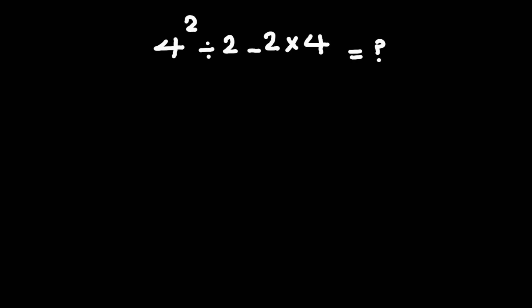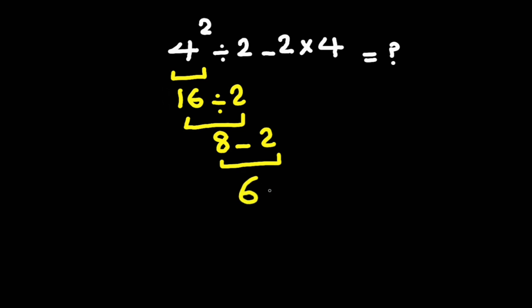Hey guys and welcome to this video. We have 4 to the power of 2 divided by 2 minus 2 times 4. Now, 4 to the power of 2 gives us 16, and 16 divided by 2 gives us 8. Now 8 minus 2 gives us 6, and 6 times 4 gives us 44. But this answer is not correct according to the rules of mathematics.